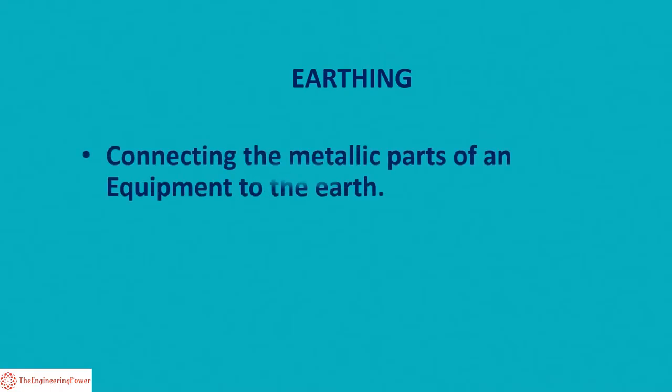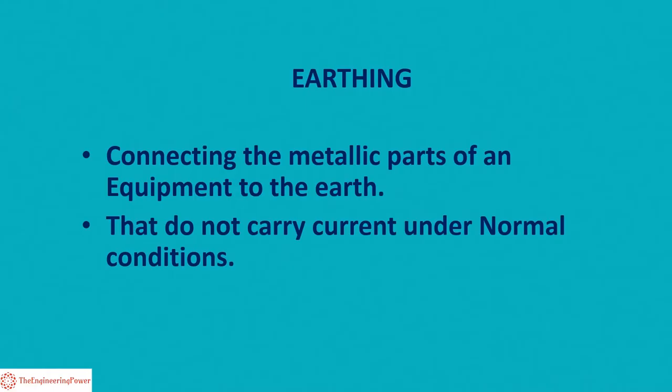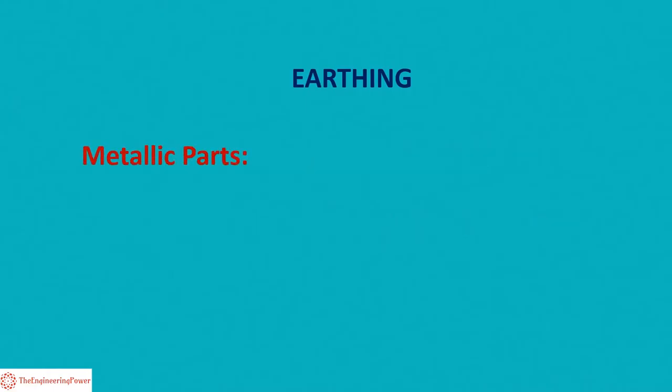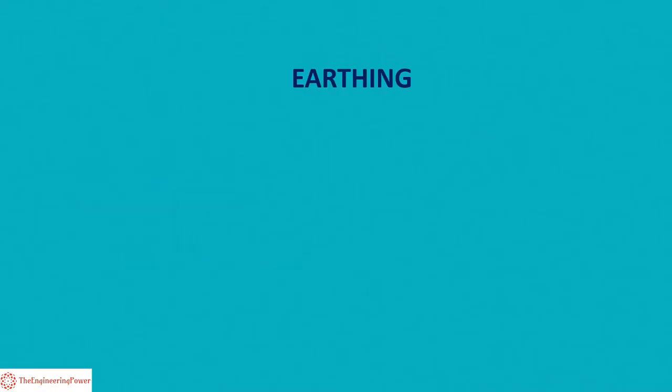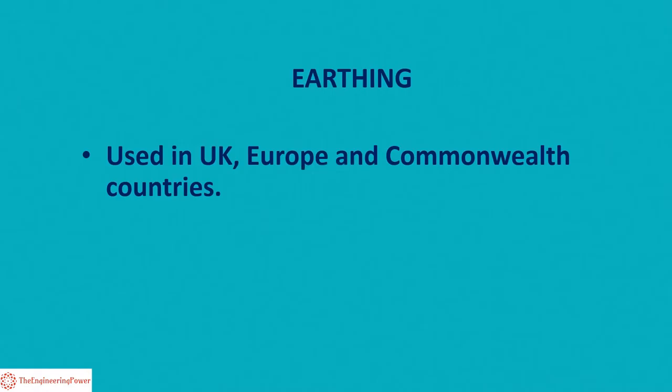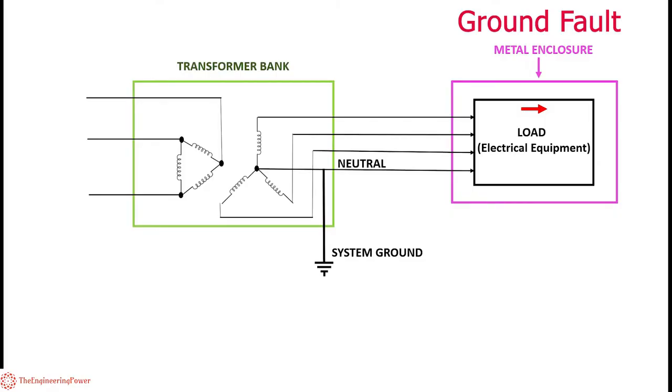Earthing refers to connecting the metallic parts of equipment to the earth that do not carry current under normal conditions. These metallic parts include the enclosures, frames, and supporting structures of the electrical equipment. The term earthing is used in UK, Europe, and most of the Commonwealth countries that follow IEC and IS standards.